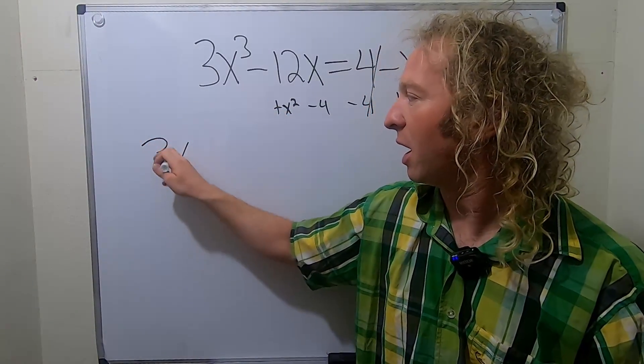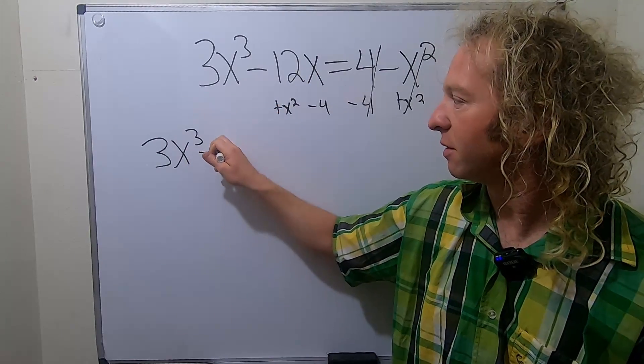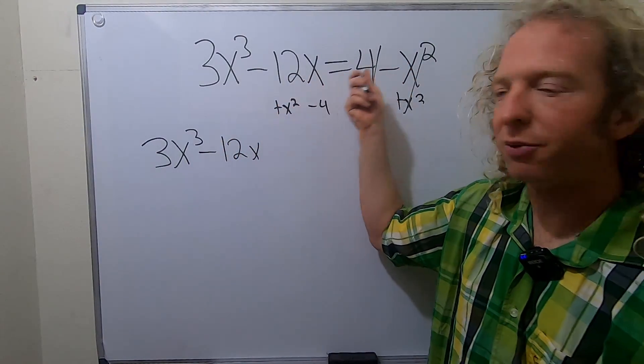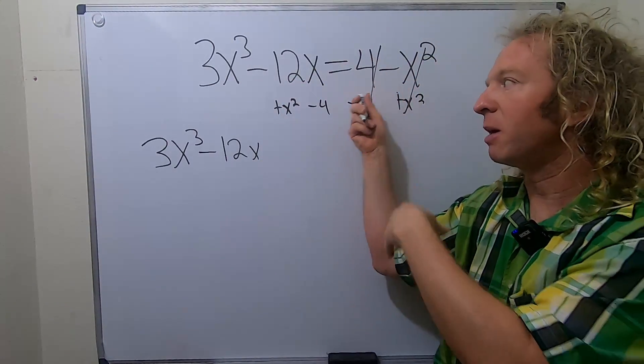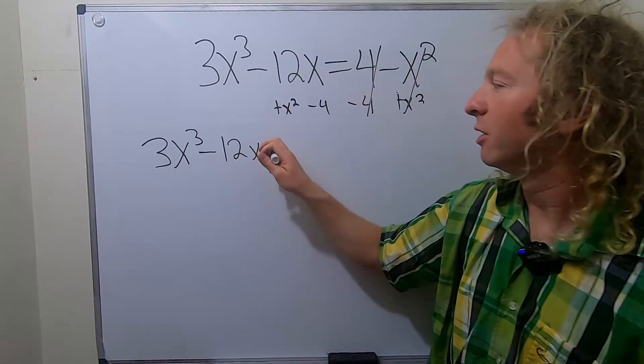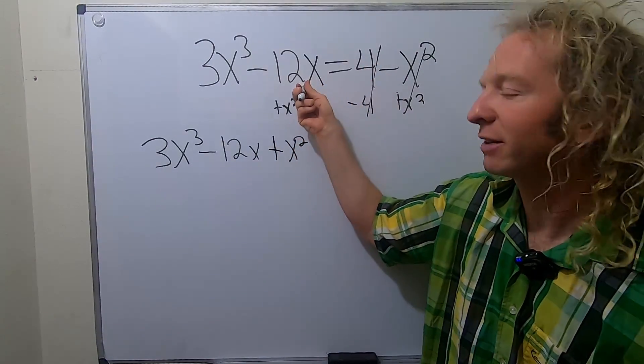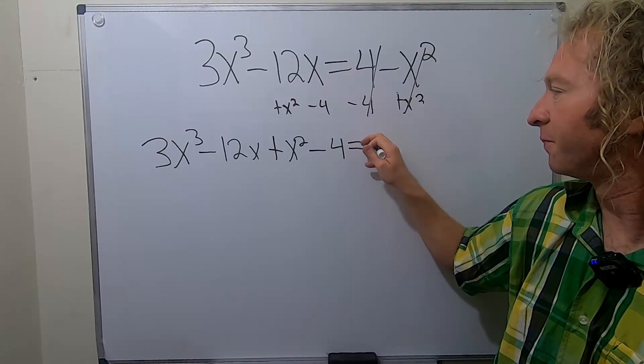We have 3x cubed minus 12x, then we have the plus x squared. You can do it in your head, right? You're adding it to the other side. So if it's negative here, it'll become positive over here. So plus x squared, and then it's positive here, so if you subtract it, it'll become negative over here. So minus 4.